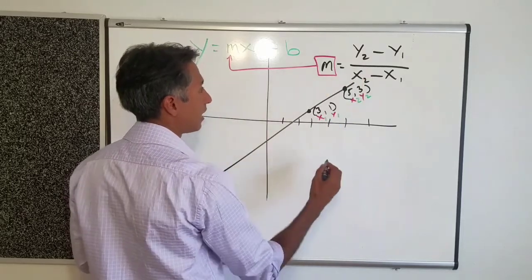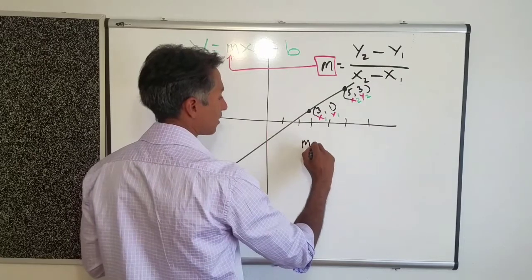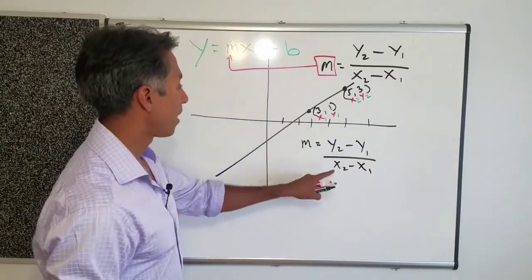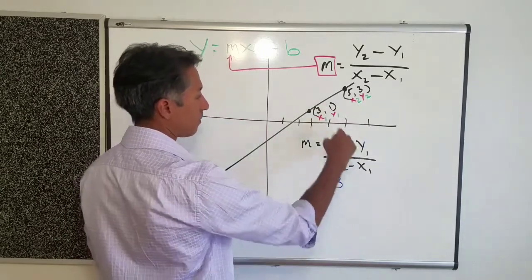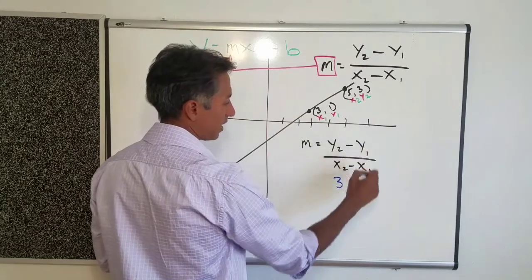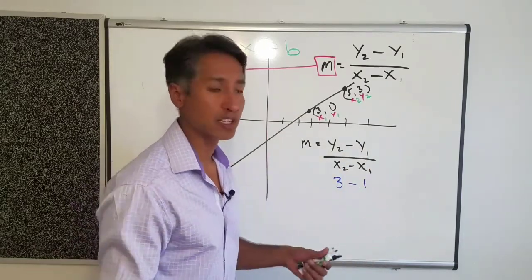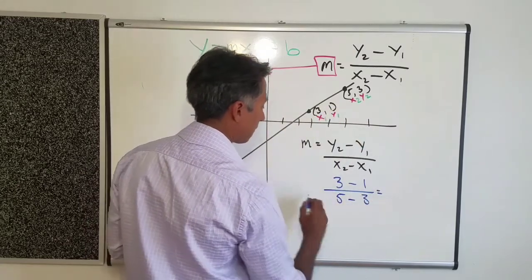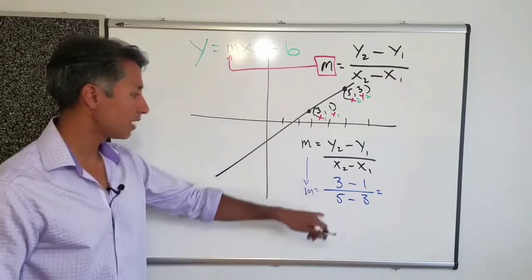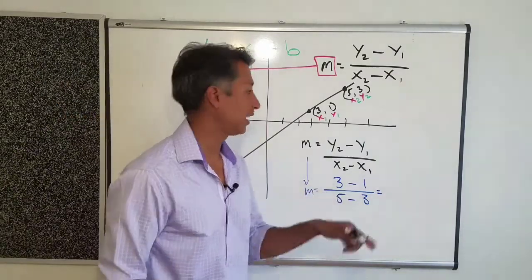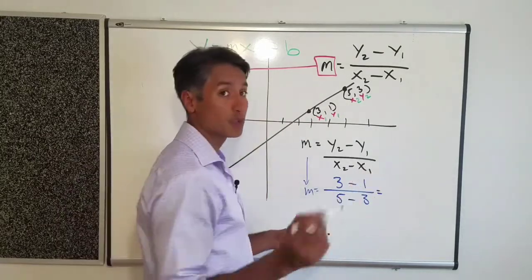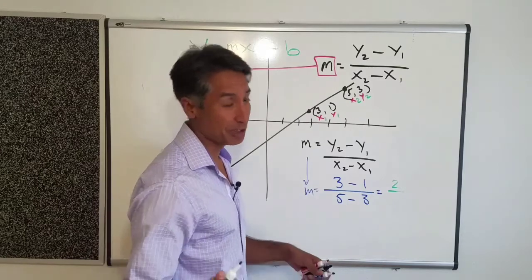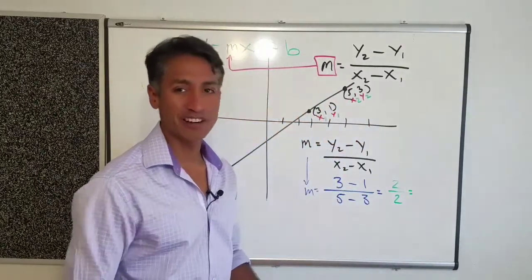Then you just start plugging stuff in and you can do the subtraction. So plugging in all these values: M equals y-sub-2 minus y-sub-1 over x-sub-2 minus x-sub-1. Y-sub-2 is 3, y-sub-1 is 1, the minus sign just comes down. X-sub-2 is 5 and x-sub-1 is 3. So we work through this — 3 minus 1 is 2, and 5 minus 3 is 2.